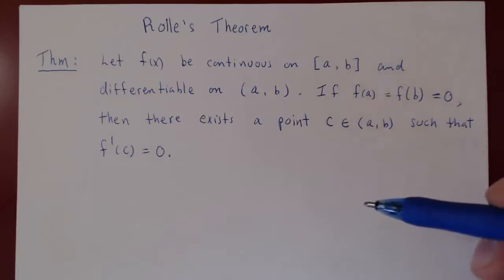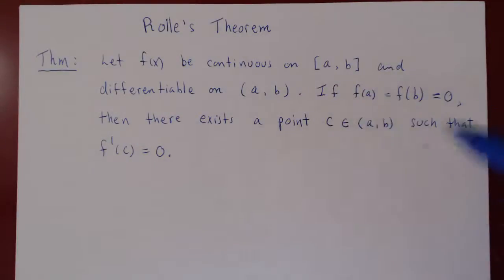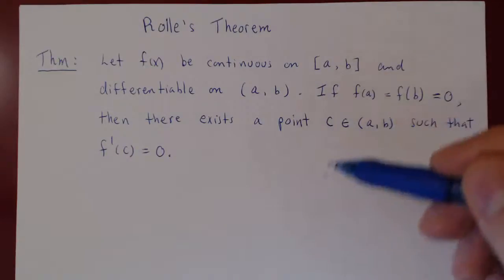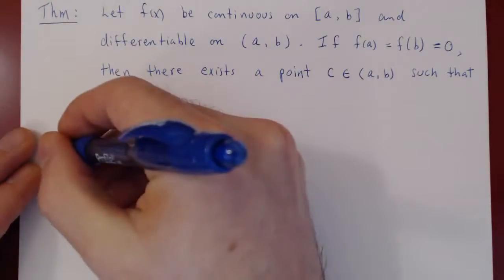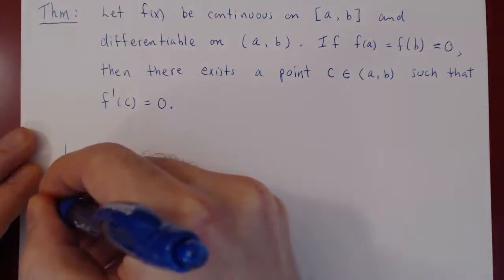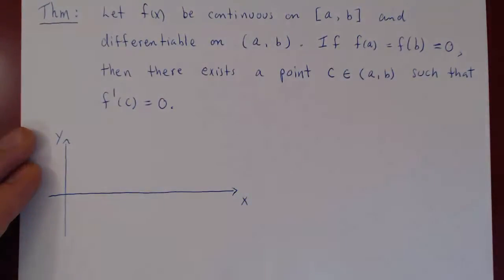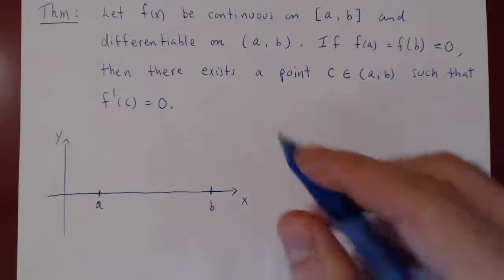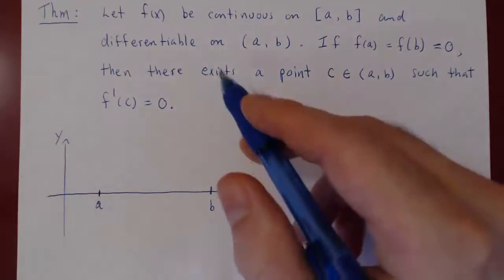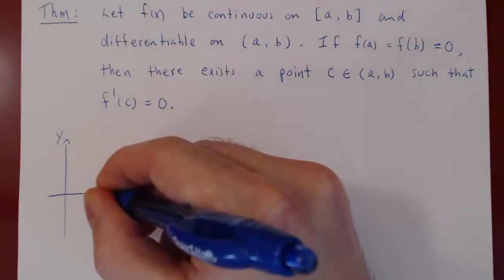Before we prove Rolle's Theorem — and the proof will be very short — let's draw a few examples of a function on [a, b] where f of a and f of b are both equal to 0, and see why the result is very obvious, at least intuitively. So we have our x-y plane, and we'll assume that a and b are both positive. Suppose this is x equals a, x equals b.